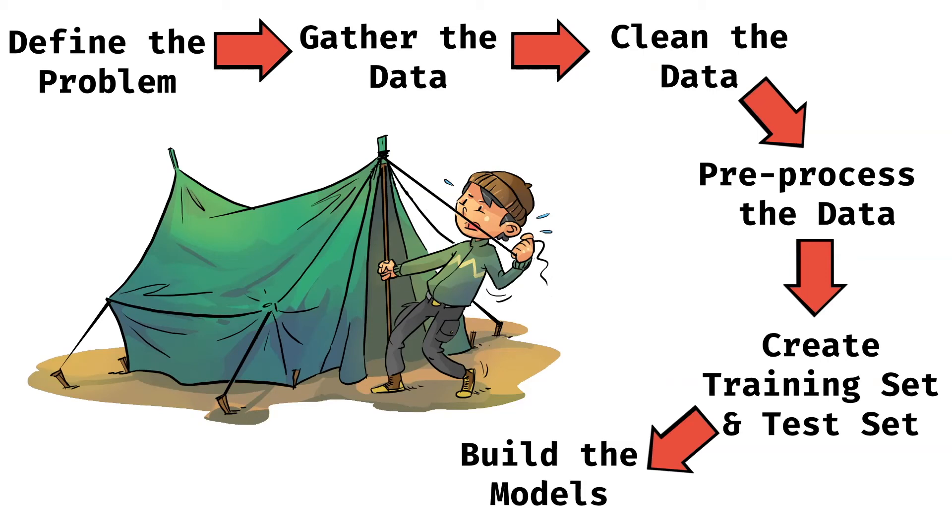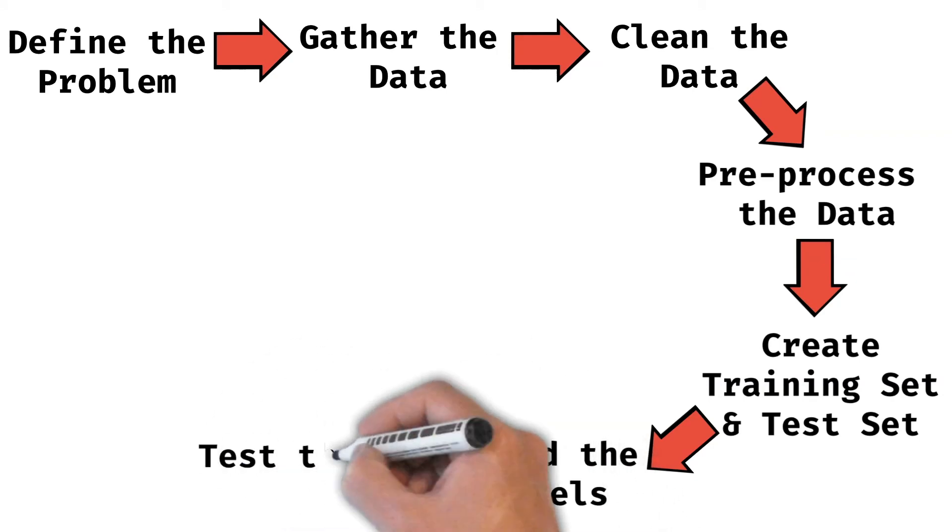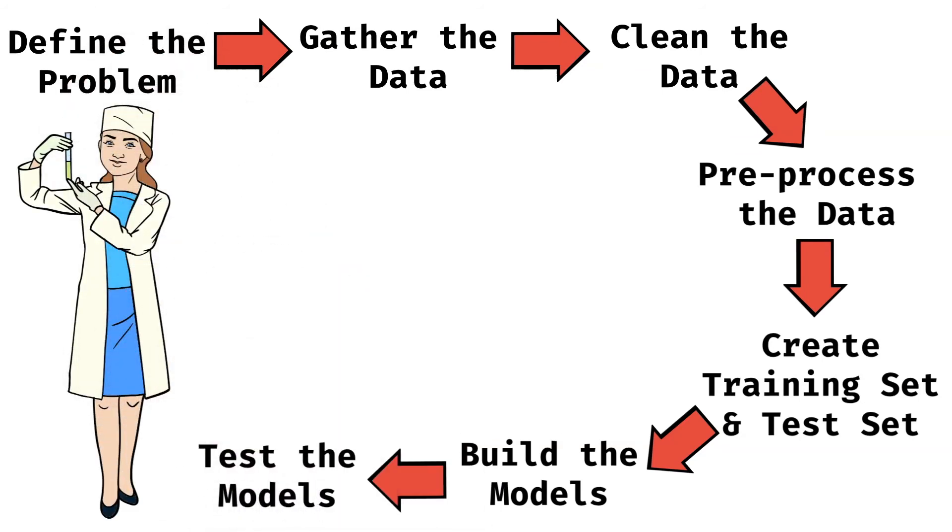Once the models are ready, we will have to test the models. We will have to check how accurate the models are at predicting for us. For that, we may use the test data to test the models or we may use the validation sets to test the models. Anyway, we will have to do a lot of testing to ensure that our models are going to behave properly and give the best possible results.